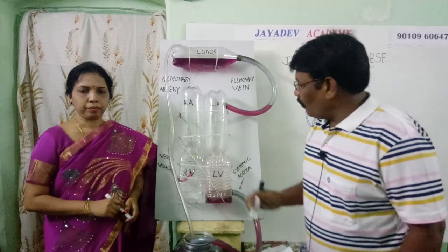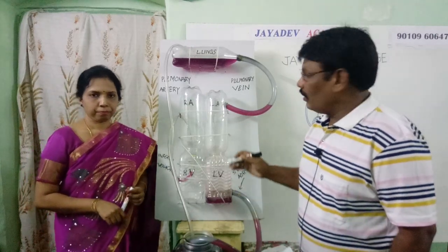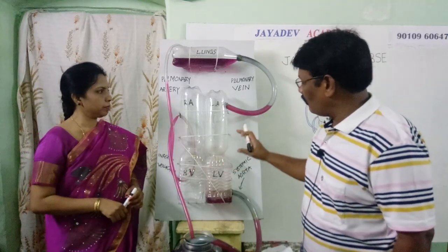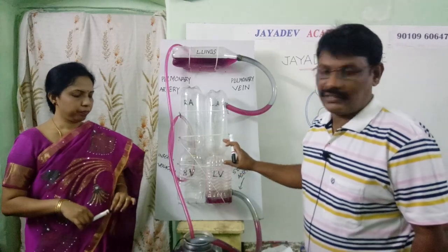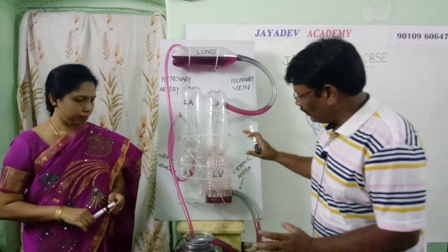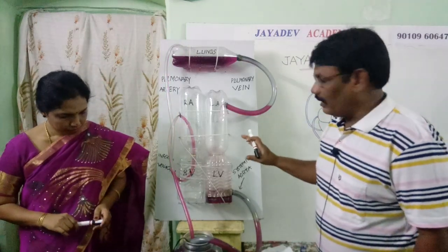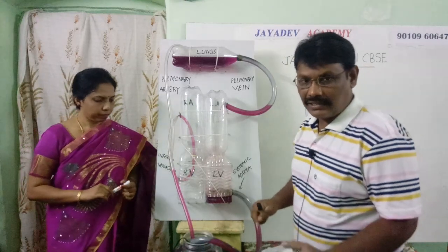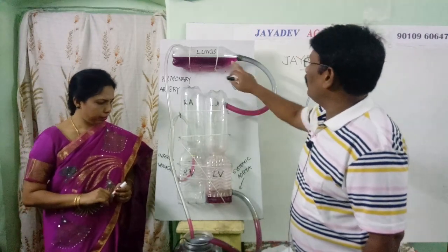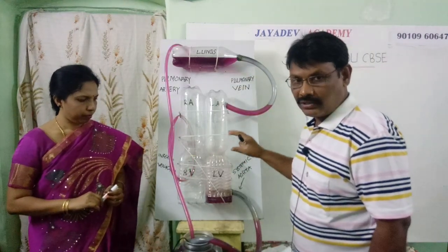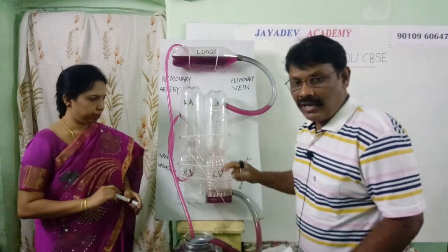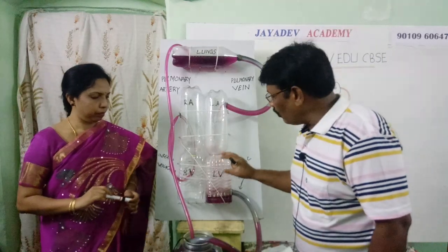Hi students. Now we are learning about the human circulatory system with the wonderful and fabulous working model of human circulatory system, which is prepared by our Aparna Madam. The human circulatory system consists of one heart, blood vessels, and blood. These are the three parts present in our human circulatory system. This blood always continuously moves in our body.